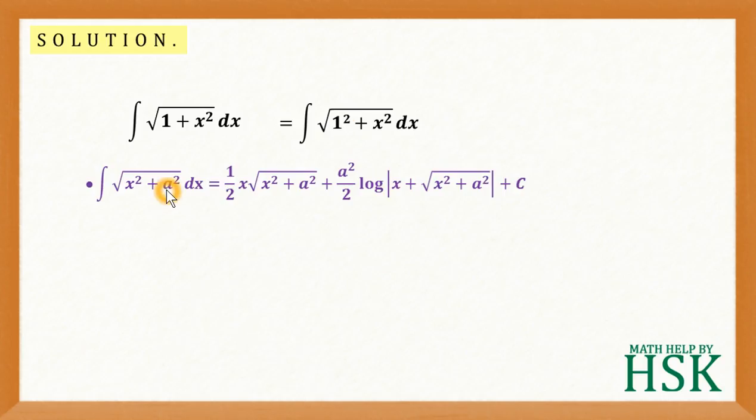And in this formula, what we have to do, we have to just replace a with 1. So I'm going to get this as equal to 1 by 2 x into square root of x square plus a square. That is a square, 1 square is 1. So I'm going to get square root of 1 plus x square.